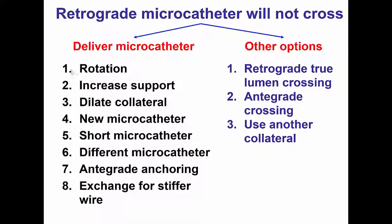To deliver the microcatheter, one option is to try rapid rotation in either direction. Another is to increase guide catheter support, for example with a guide catheter extension or with an anchor balloon. You can also dilate the collateral with a small balloon, usually 1.2, 1.25, or 1.5 mm. Sometimes there is microcatheter fatigue, and trying a new microcatheter may succeed where a previous one has failed. Using a short 135 cm microcatheter might also be beneficial with more torque transmission compared to the longer 150 cm microcatheters.